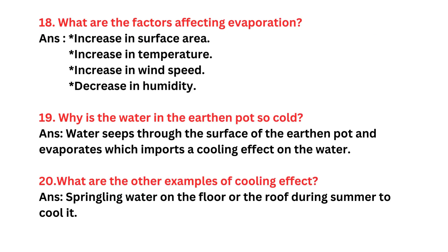Extra Question 18: What are the factors affecting evaporation? Answer: Increase in surface area, increase in temperature, increase in wind speed, and decrease in humidity. Extra Question 19: Why is the water in an earthen pot so cold? Answer: Water seeps through the surface of the earthen pot and evaporates, which imparts a cooling effect on the water inside.